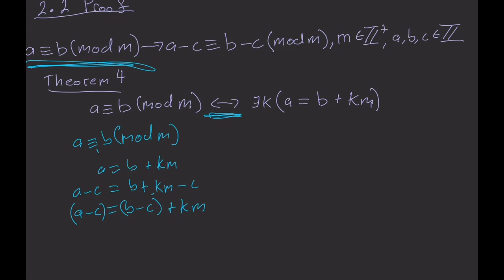What makes theorem four so useful is it has an if and only if, which is a symmetric logical relation. And because of that, we can walk it straight back to where we came from. And now a is replaced with a minus c and b is replaced with b minus c. So what we end up with is a minus c is congruent to b minus c modulo m.